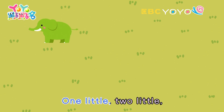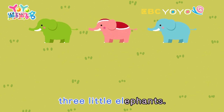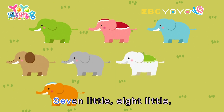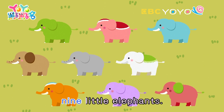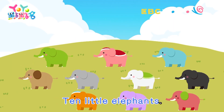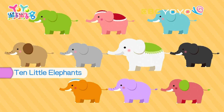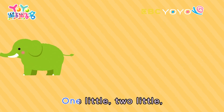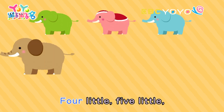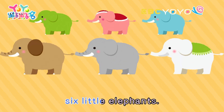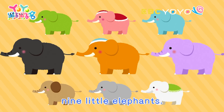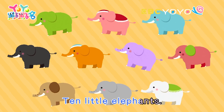One little, two little, three little elephants. Four little, five little, six little elephants. Seven little, eight little, nine little elephants. Ten little elephants.